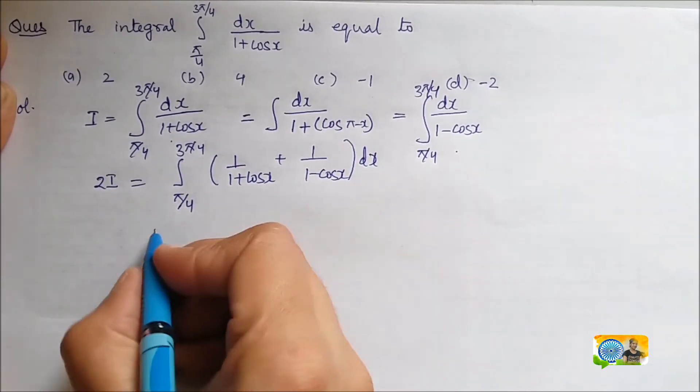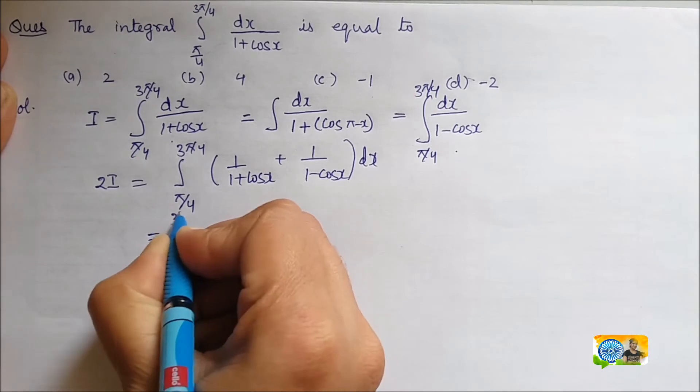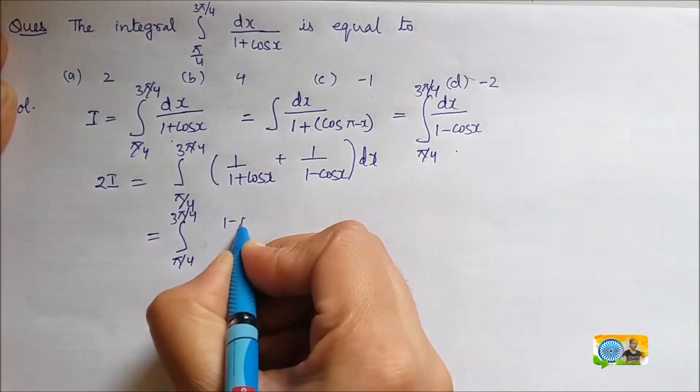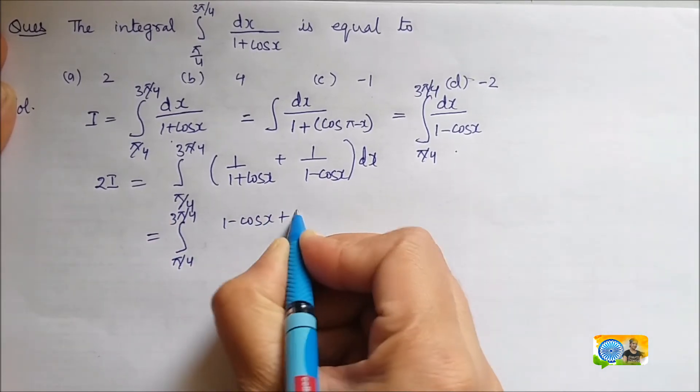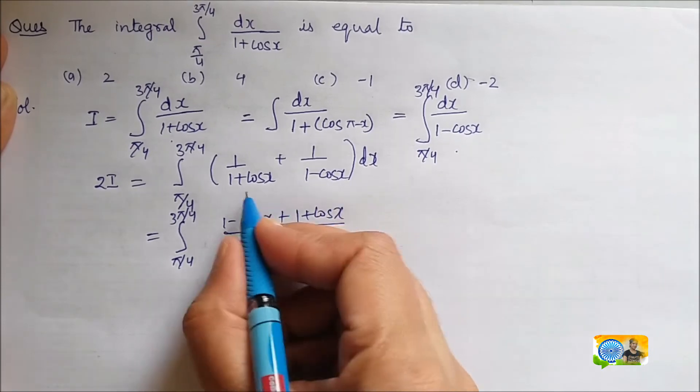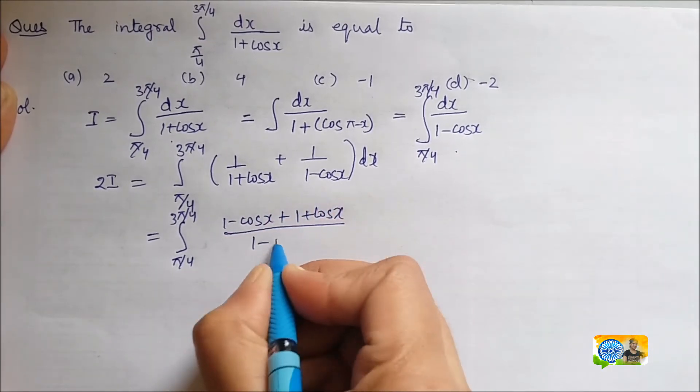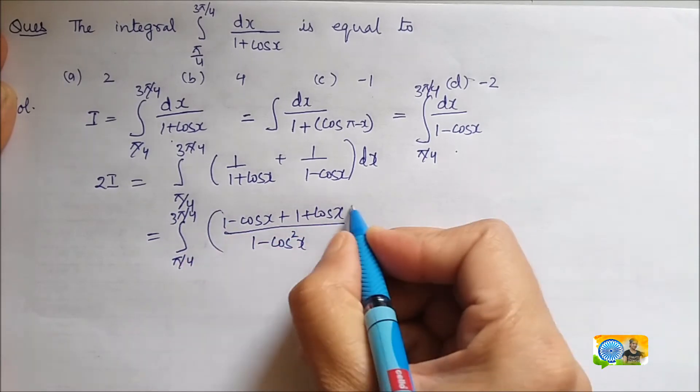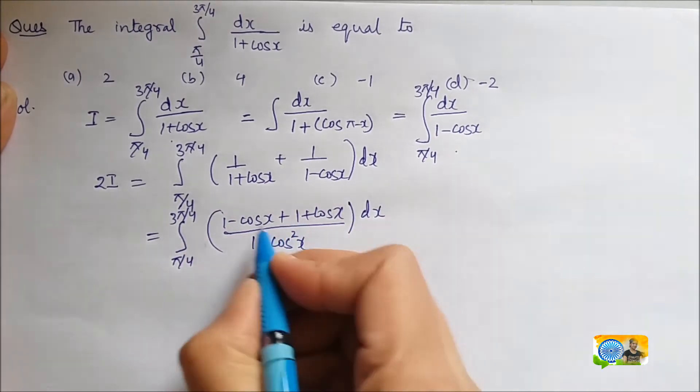Now, this can be written as between limits pi by 4 to 3 pi by 4. This will be 1 minus cos x plus 1 plus cos x. Denominator will be 1 minus cos square x and this whole is dx. From this, this cos x and cos x will go.